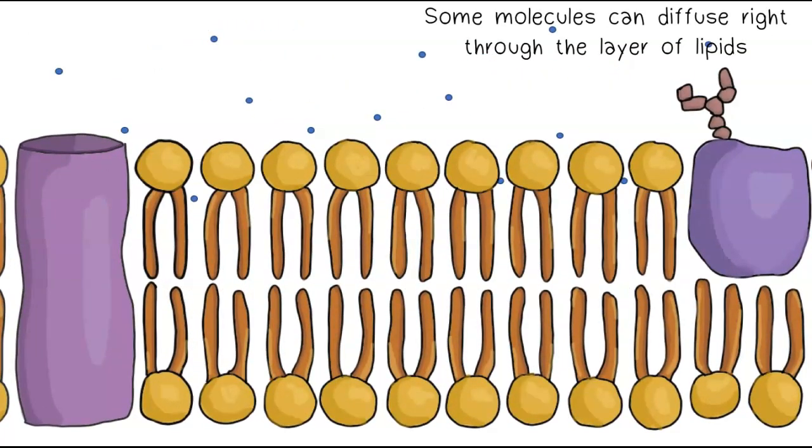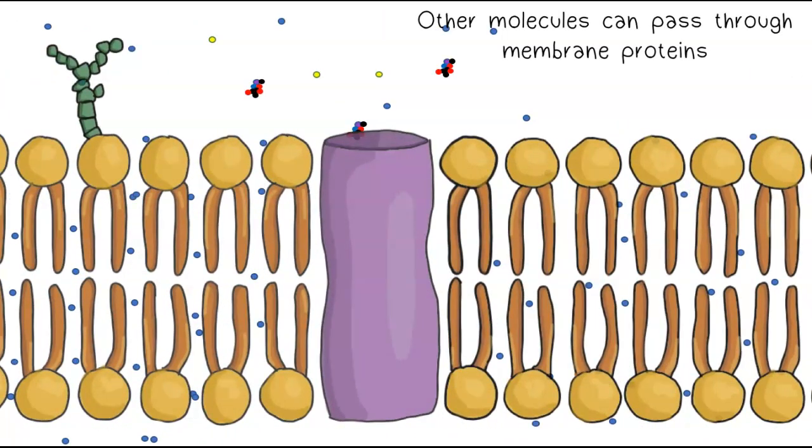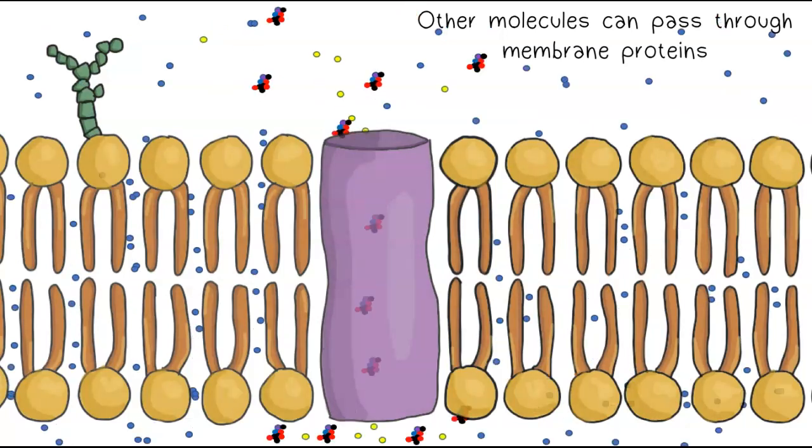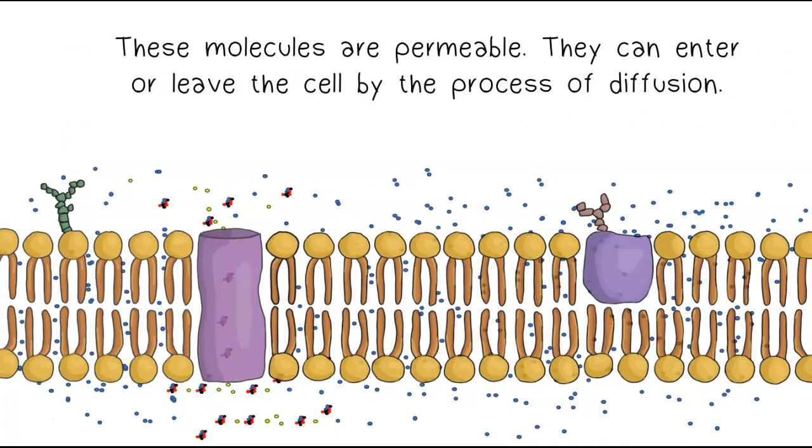Some molecules can diffuse right through the layer of lipids. Other molecules can pass through membrane proteins. These molecules are permeable. They can enter or leave the cell by the process of diffusion.